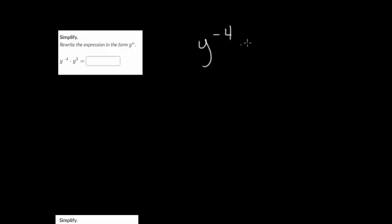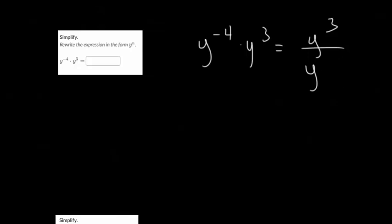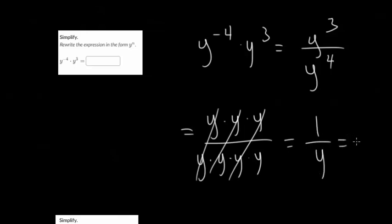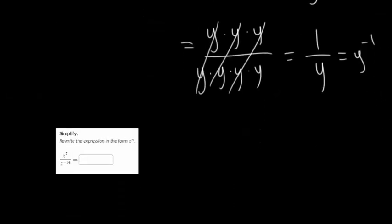Moving on to the next one. We have y to the minus 4 times y cubed. I'll rewrite that: in the denominator you have y to the positive 4, because now it's in the denominator — we are dividing by y 4 times. y cubed is just 3 y's multiplied together, and y to the 4th is 4 y's multiplied together. Three of these cancel, and you're left with 1 in the denominator — so we are dividing by y once, which can be rewritten as y to the minus 1. You'd also see this by adding the exponents: minus 4 plus 3 gives you negative 1.